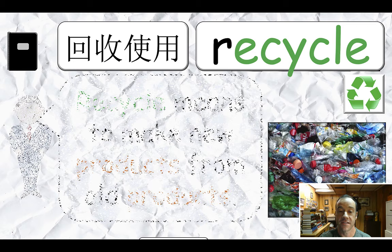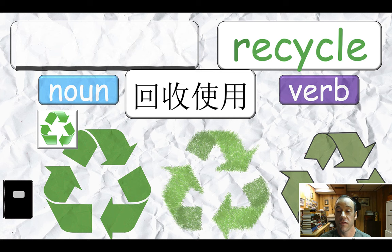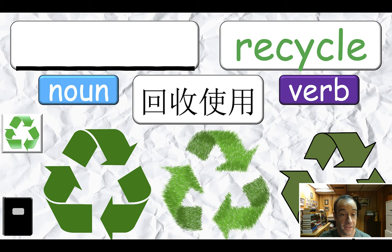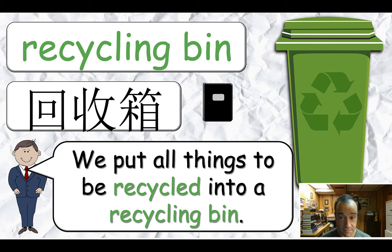And of course we have recycle. Recycle means to make new products from old products. Some students might notice the word changing — recycle is a verb. What is the noun for this? The noun for this is the name of this lesson: recycling. Have them write them both down. And then what is this thing? It's a recycling bin — this is just good language for them to know. We put all things to be recycled into a recycling bin.